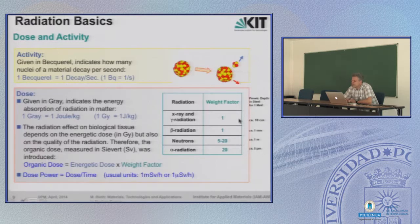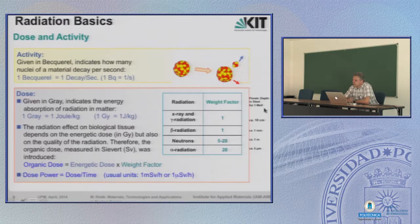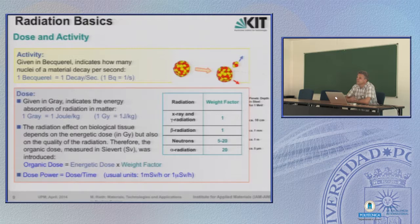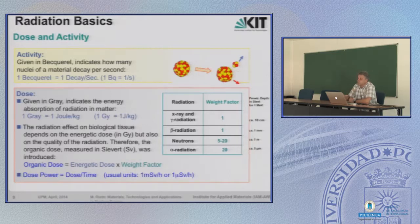This leads finally to the organic dose — the energetic dose weighted by the factor, given in Sievert. The penetration depth of these different radiation types is plotted here for steel. For 1 MeV gamma or x-ray radiation, penetration depth is about 10 centimeters. For electron radiation it's only 1 millimeter, so it doesn't affect the internal structure at all. For neutrons it's 1 meter. For alpha irradiation it's only 5 micrometers — harmless if external, but dangerous if the emitting material is incorporated.